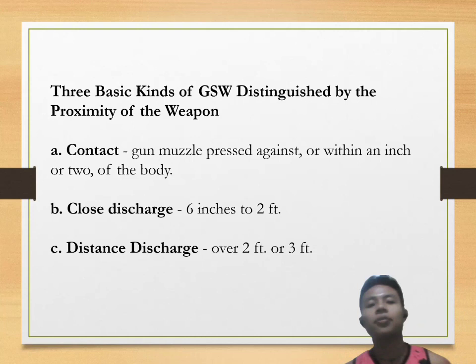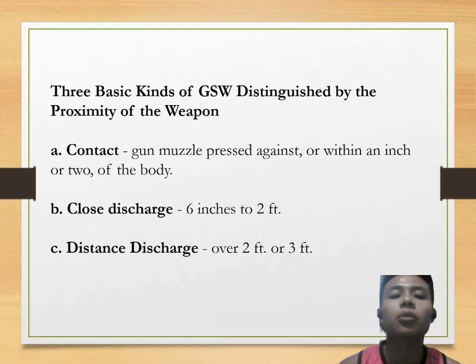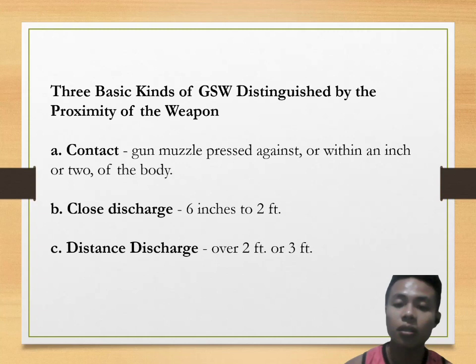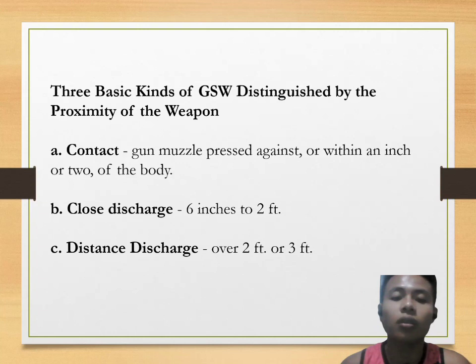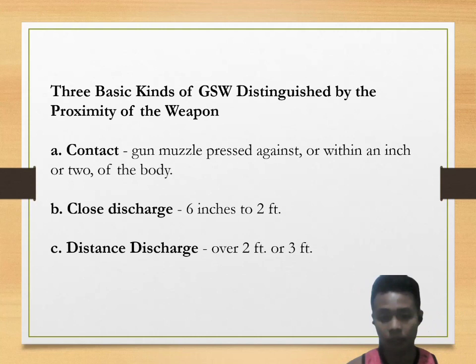Three basic kinds of gunshot wounds distinguished by the proximity of the weapon: Contact — the gun muzzle is pressed against or within an inch or two of the body. Close discharge — the distance is six inches to two feet. Distance discharge — the distance is over two to three feet.